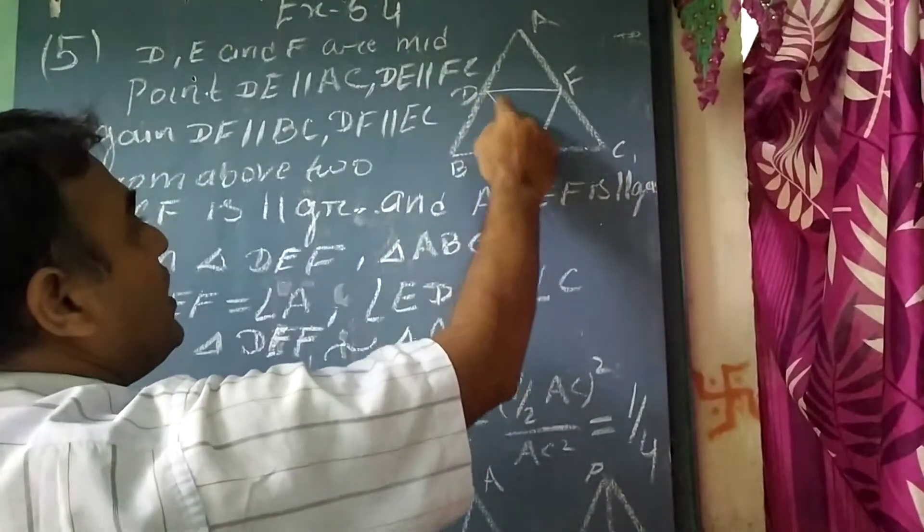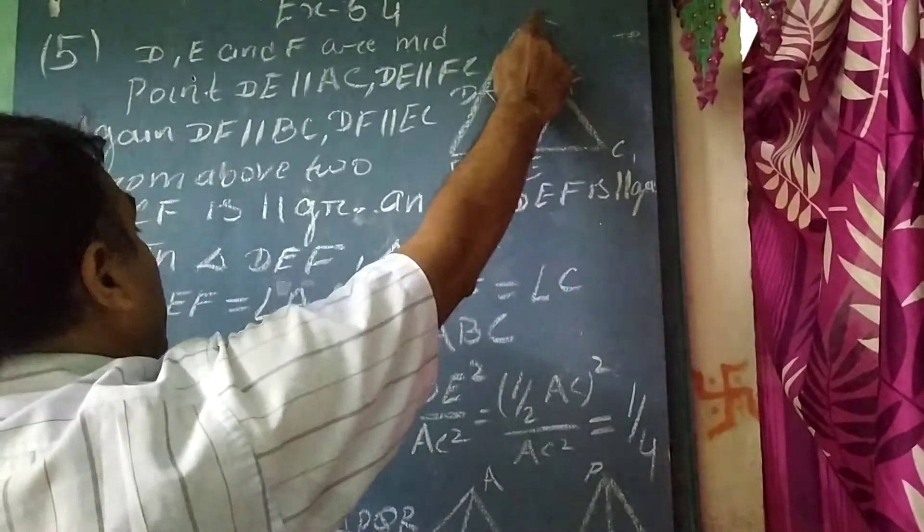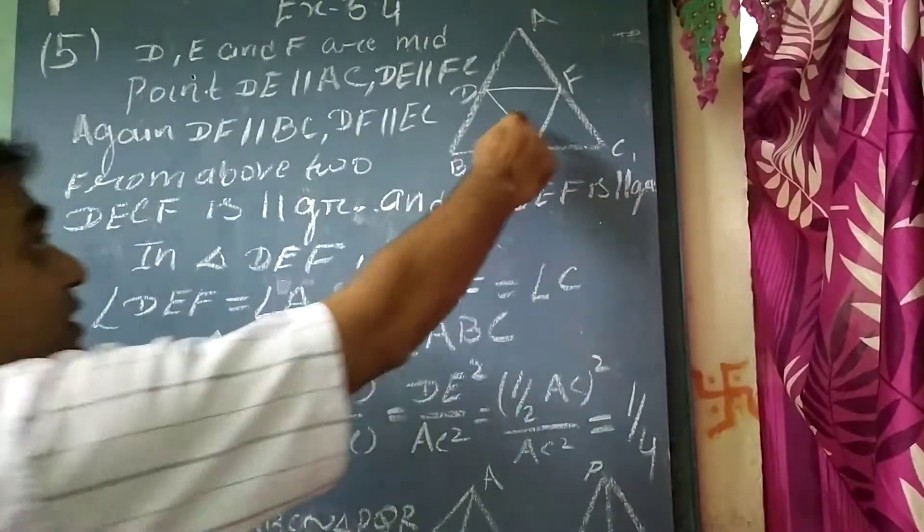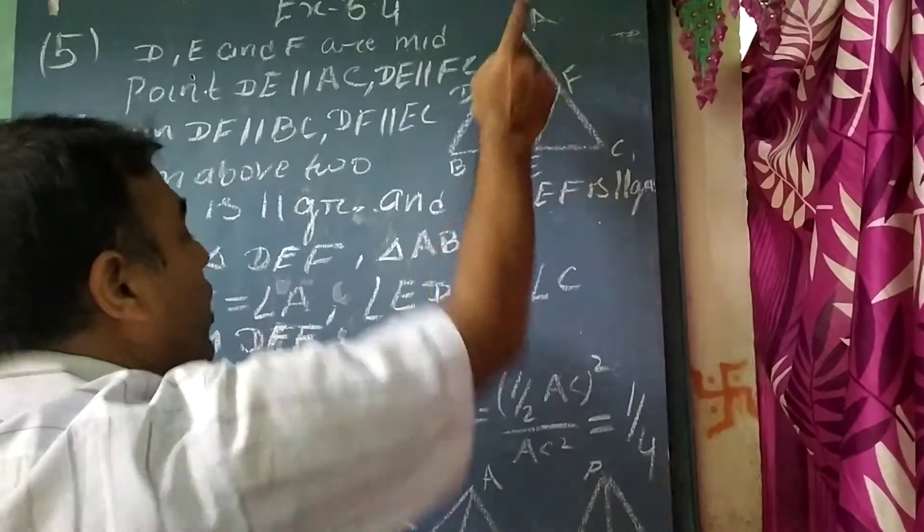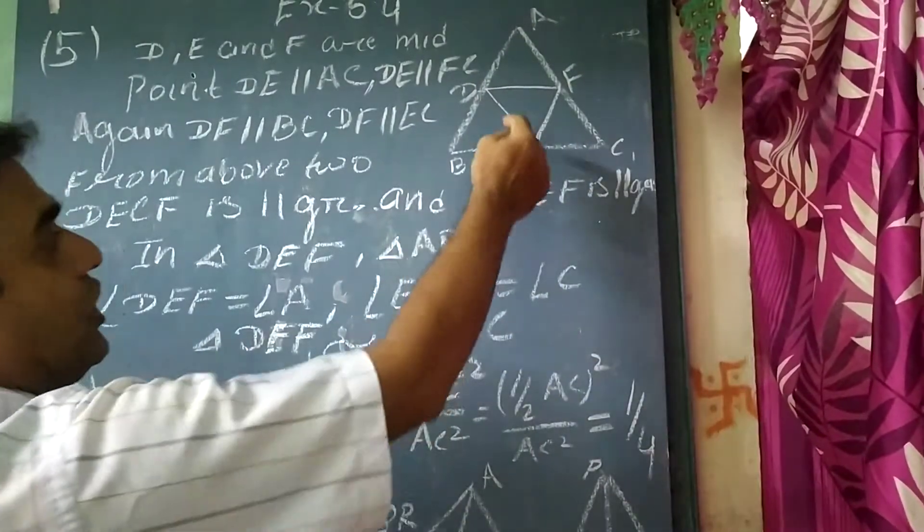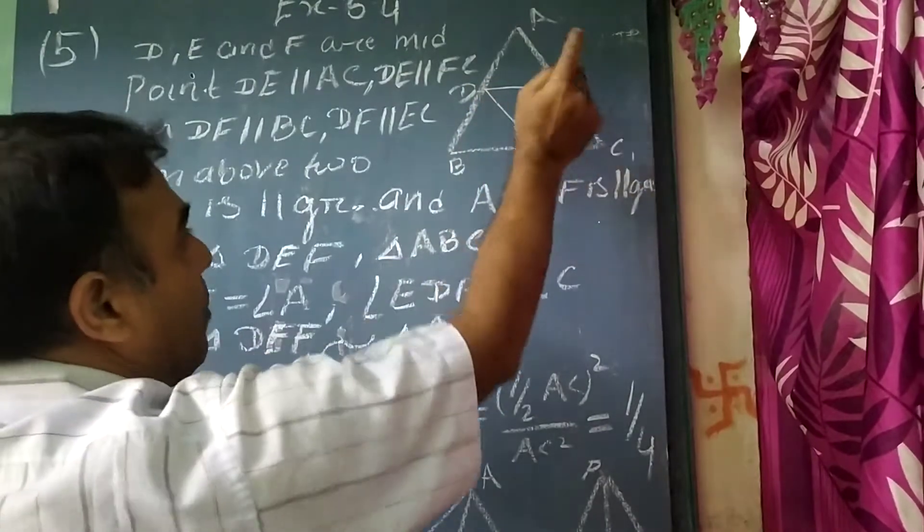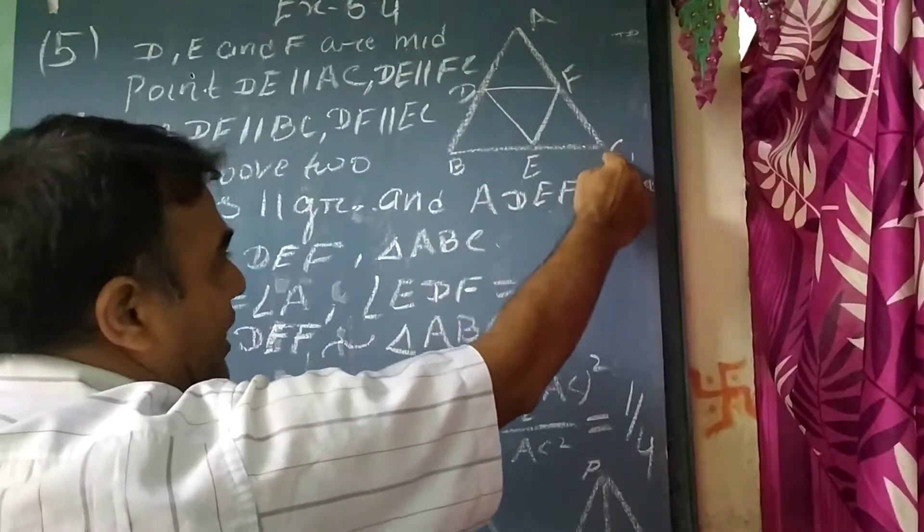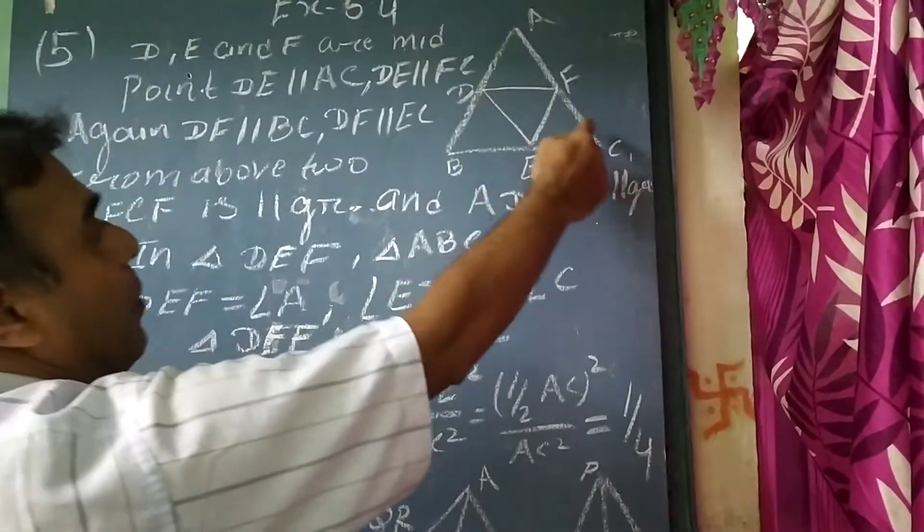Angle DEF equal to angle A, as the vertically opposite angles of the parallelogram. And angle EDF is equal to angle C as the opposite angles of the parallelogram.